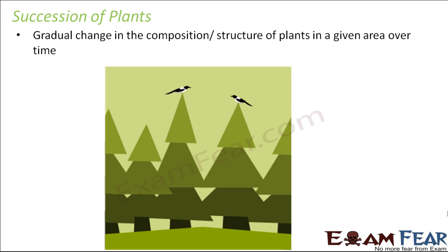Maybe in one particular area, you had a particular type of plants at a certain point of time. Now over a long period of time, the variety of plants changed. For example, maybe there was one area which was all covered with grasses, and now over a long period of time you see huge tall trees over that area. So the change in composition or structure of plants in a particular area over time is termed as succession of plants.